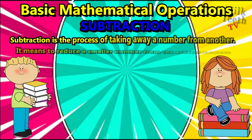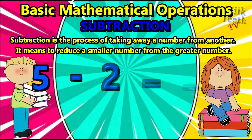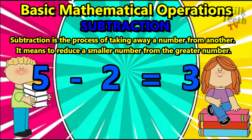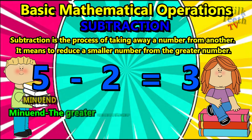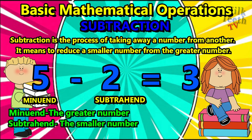Subtraction is the process of taking away a number from another — it means to reduce a smaller number from the greater number. Let's see a quick example: five minus two is equal to three. Here, the minuend is the greater number and the subtrahend is the smaller number.